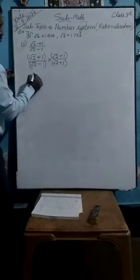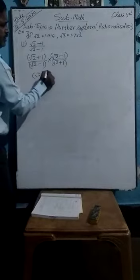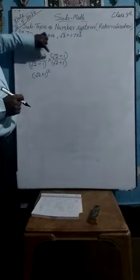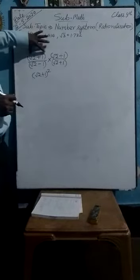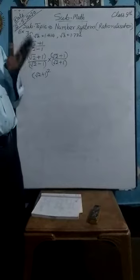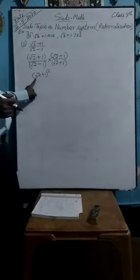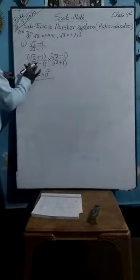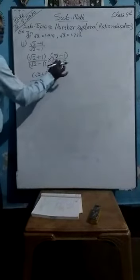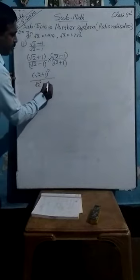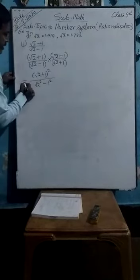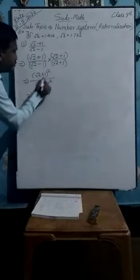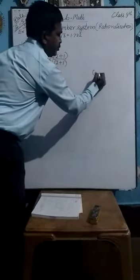Now these brackets are the same — it can be written as under root 2 plus 1 whole square. Why? Because these values are same with symbol, and the same bracket written two times can be written as a plus b whole square. Now here, a minus b and a plus b by using formula gives under root 2 square minus 1 square. And for the numerator, apply a plus b whole square — I have told you: a plus b whole square equals a square plus b square plus 2ab.